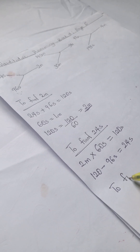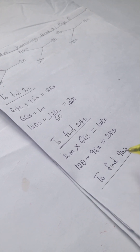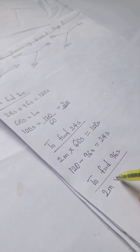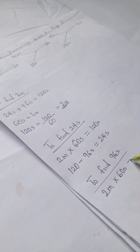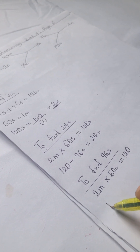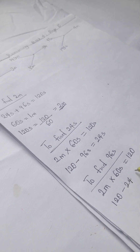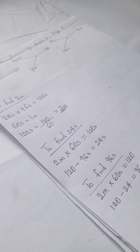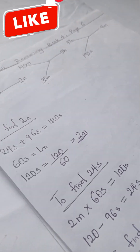To find 96 seconds, we have 2 minutes times 60 seconds, which gives us 120 seconds. Then 120 minus 24 gives us 96 seconds.